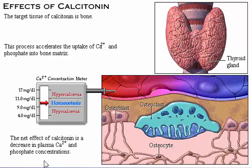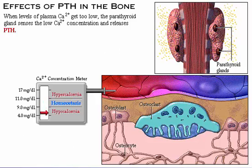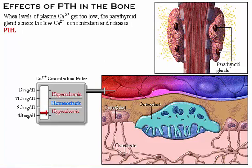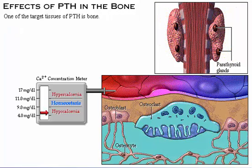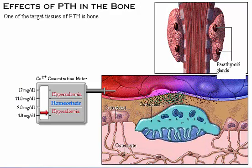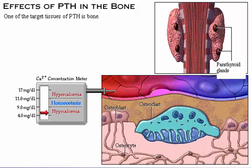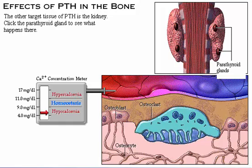Calcitonin appears to be a hormone more important in children than adults. When levels of plasma calcium get too low, the parathyroid gland senses the low calcium concentration and releases parathyroid hormone. One target tissue of parathyroid hormone is bone, where it increases the number and activity of osteoclasts, releasing calcium ion and phosphate into the plasma. The other target tissue is the kidney.